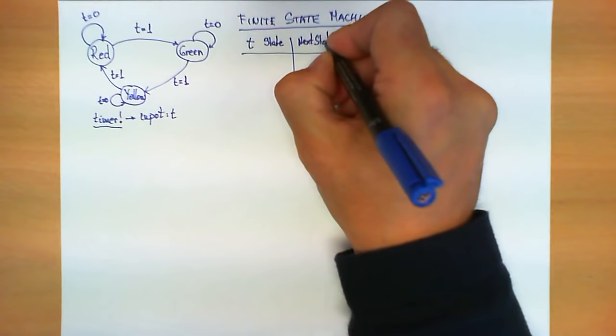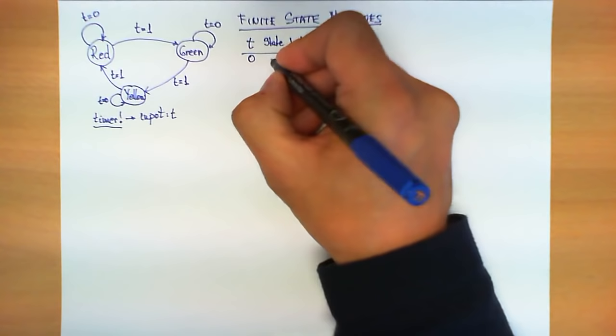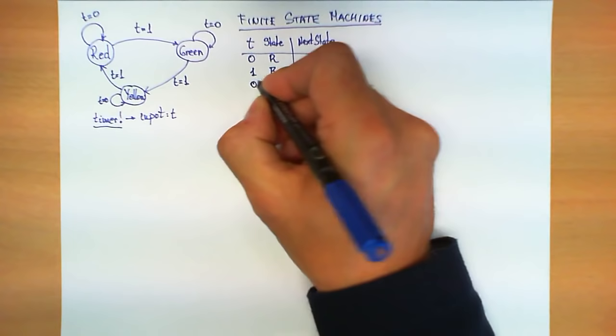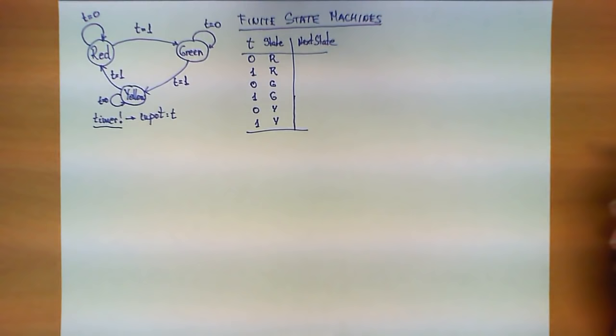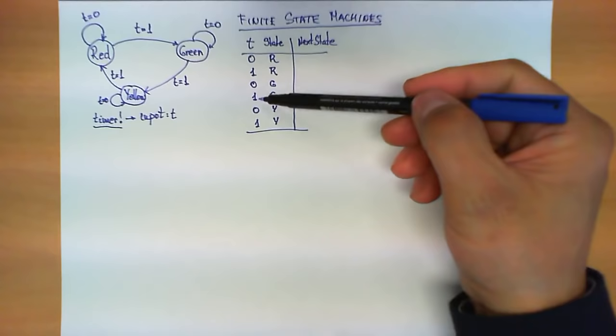In this case we have six combinations: T is 0 and we are at a red state; T is 1 and we are at a red state; T is 0 and we are in green; T is 1 and we are in green; T is 0 and we are in yellow; and T is 1 and we are in yellow. These are the six possible combinations between the states — red, green, and yellow — and the two possible values of the input.